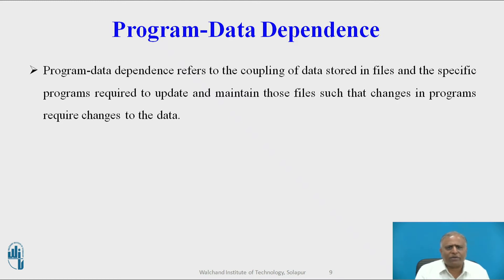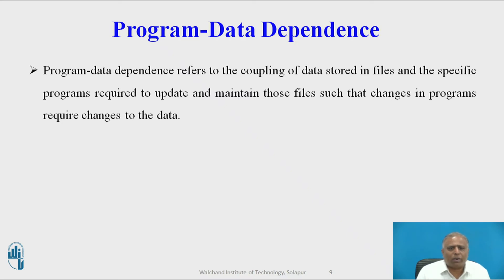Program data dependence refers to the coupling of data stored in files and the specific programs required to update and maintain those files — changes to the program require changes to the data. Every traditional computer program has to describe the location and nature of data it works with. In a traditional file environment, any change in a software program could require a change in the data accessed by that program. For example, one program might be modified from a five-digit to a nine-digit zip code; if the original data file were changed accordingly, other programs requiring the five-digit zip code would no longer work properly. Such changes could cost millions of dollars to implement properly.